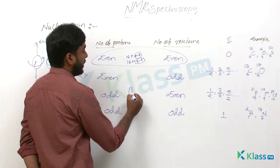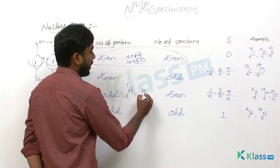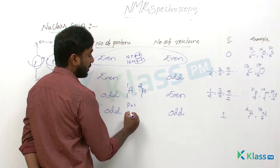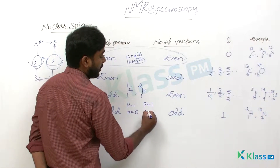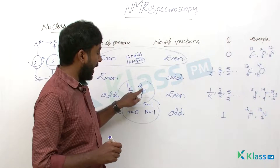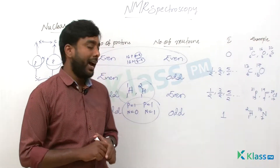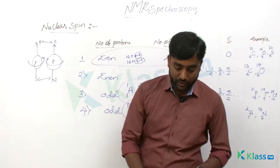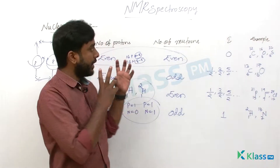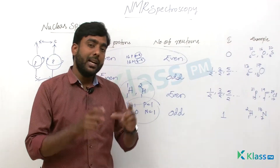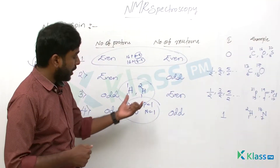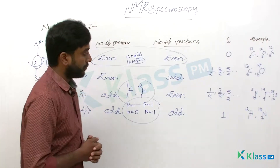Regarding hydrogen's special case: H-1,1 has 1 proton and 0 neutrons, while H-1,2 has 1 proton and 1 neutron. Both isotopes are NMR active. That is why, wherever we consider a hydrogen nucleus for studying NMR spectroscopy, we call it proton magnetic resonance spectroscopy, because the proton plays the crucial role.